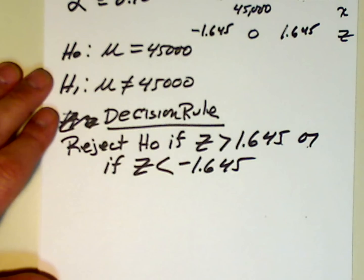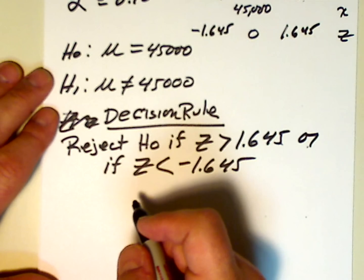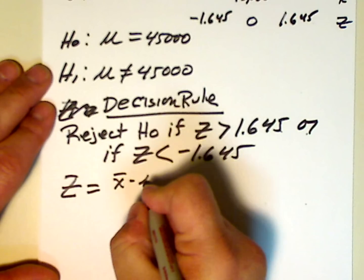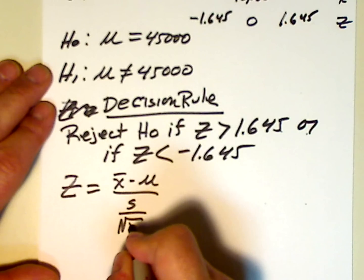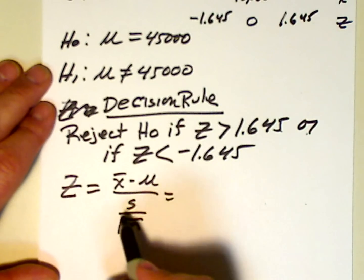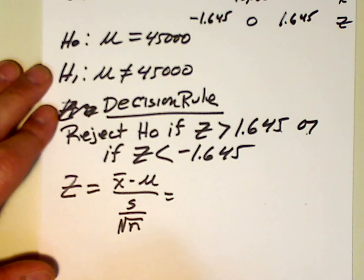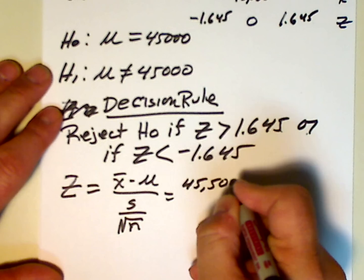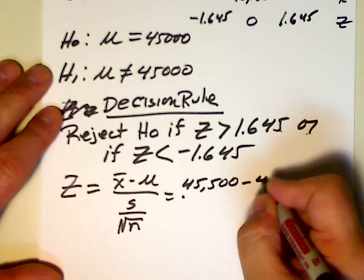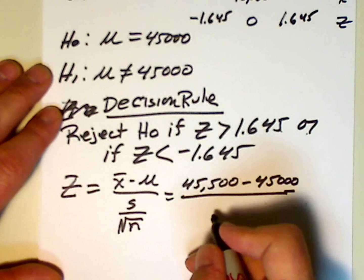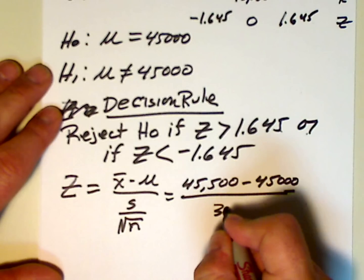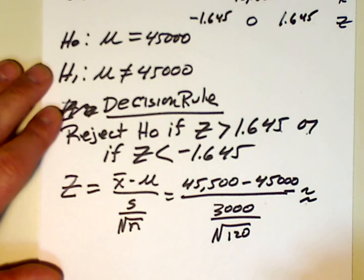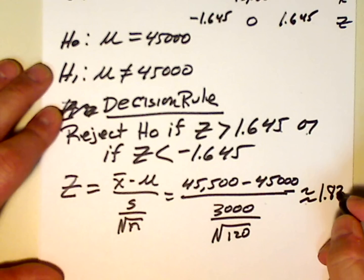And now, let's see if we do indeed reject or do not reject. Let's calculate our test statistic z, which is equal to x̄ minus μ over s over the square root of n. And I encourage you to write out the formulas every time. It'll help you memorize them. So, x̄ is 45,500, and we're subtracting off μ, 45,000, divided by s, which is 3,000, over the square root of n, which is 120. And if you do the arithmetic, you'll see that this works out to be about 1.83.